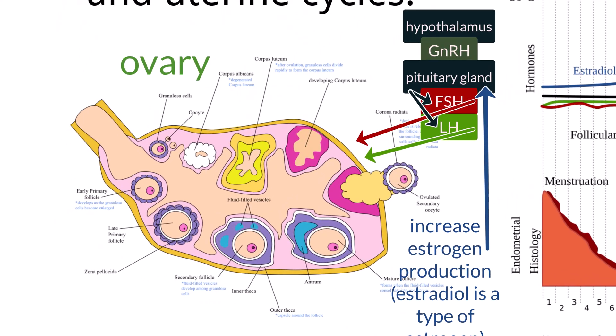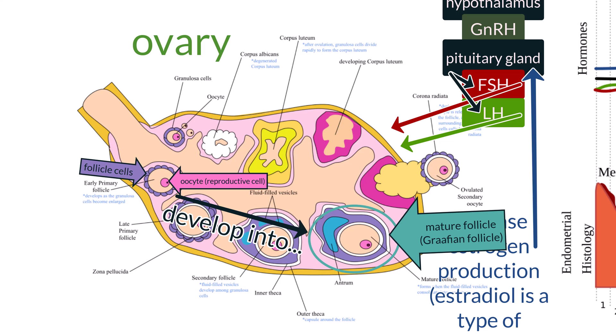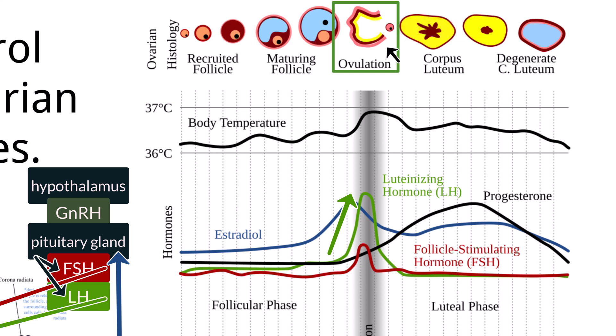The increase in FSH and LH causes the production of structures called Graafian follicles. Within the ovary are structures called follicle cells and the reproductive cells — possible future eggs — in a state of development called oocytes. FSH and LH will cause these follicle cells and the oocyte to become Graafian follicles. A spike in LH will cause ovulation. The oocyte is released along with the Graafian follicle's inner ring of follicle cells, which will enter the fallopian tube soon after ovulation. The outer ring of the Graafian follicle will remain and begin to secrete progesterone.